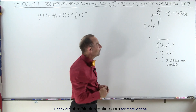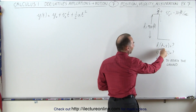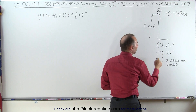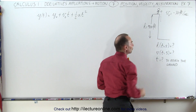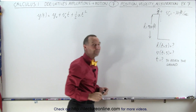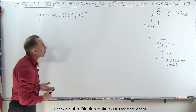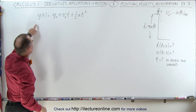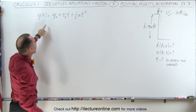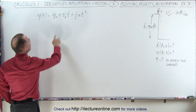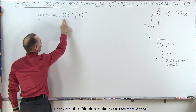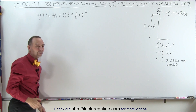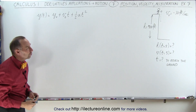We're trying to find where it will be after 5 seconds, what the velocity will be after 5 seconds, and how long it will take to reach the ground. The equation that describes the position of an object in the vertical direction can be expressed with the initial height, the initial velocity, and the acceleration — in this case, the acceleration due to gravity.